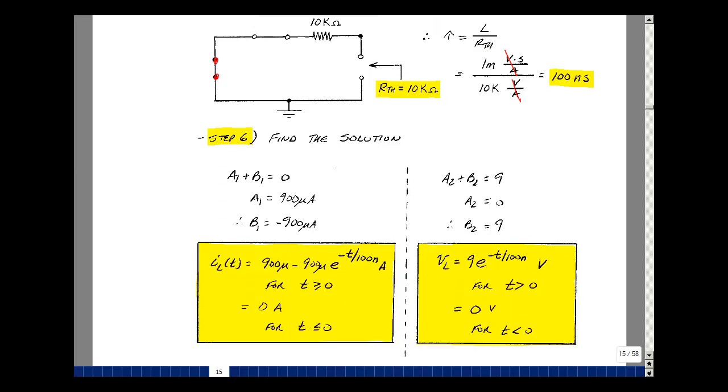Step six is to put all this together. So we have A1 plus B1 is zero. And A1 we found to be 900 microamps. So then B1 is just a negative of that. So I of t, when t is less than zero, was zero amps. And then for greater than zero, we had A1 plus B1 e to the minus t over tau. Now when you plug in t equals zero, you get the difference of these two, which is zero. So we have the equality here. The current through an inductance is continuous. So we'll always have that to be the case.